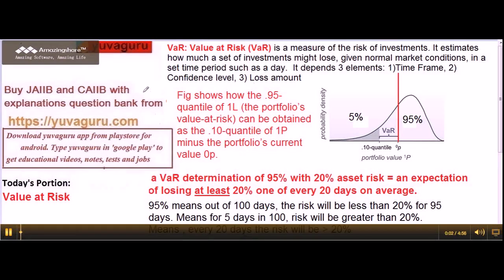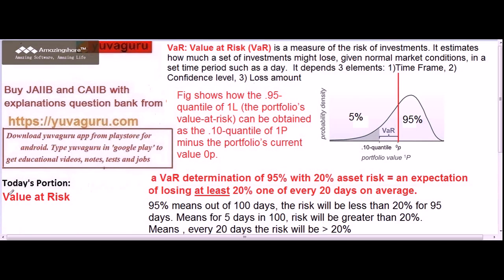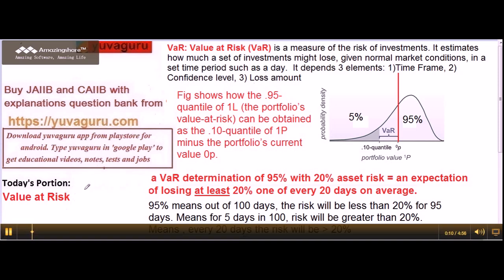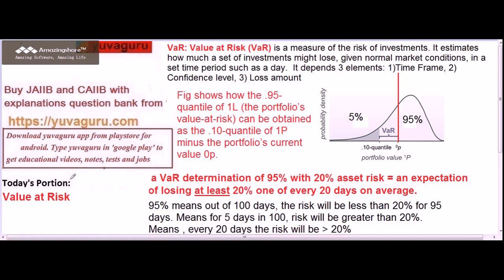Let's study Value at Risk today — VAR. This is a measure of the calculation of risk amount which we always face in terms of banking and investment. There are two measures of calculation: one is volatility and the second is VAR. Volatility used to be the favorite earlier, but nowadays VAR has come into the picture. VAR means measure of risk of investments — it estimates how much investment we might lose given normal market conditions in a set time period, such as a day, year, or month.